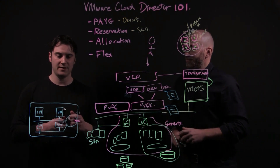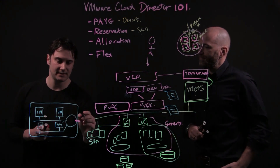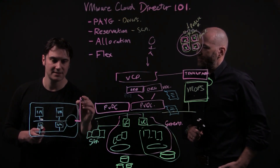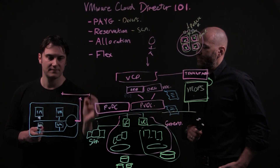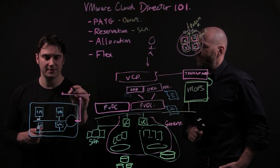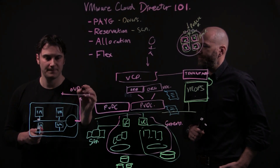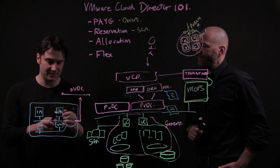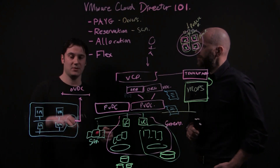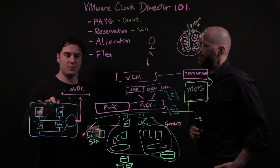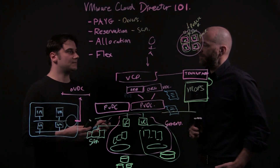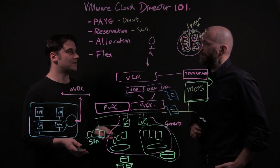How I choose to connect that later could be, say, a NAT up to my org VDC network, and that means I can assign an IP address on that range. But the point is, it's portable.